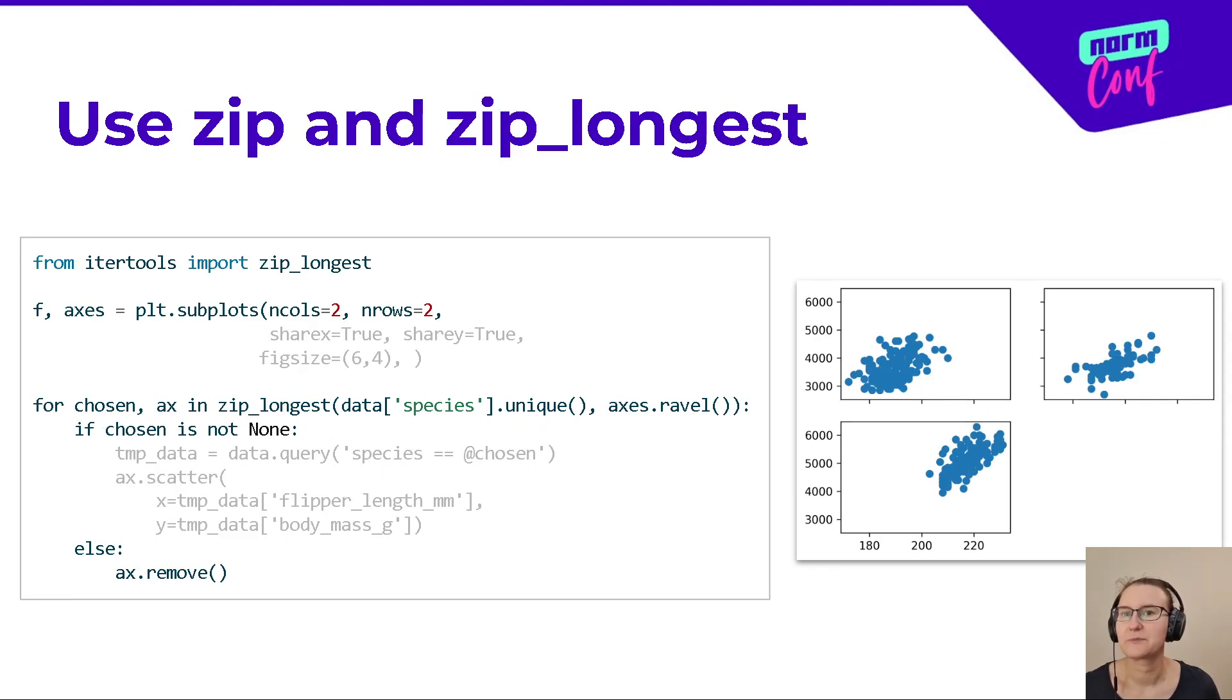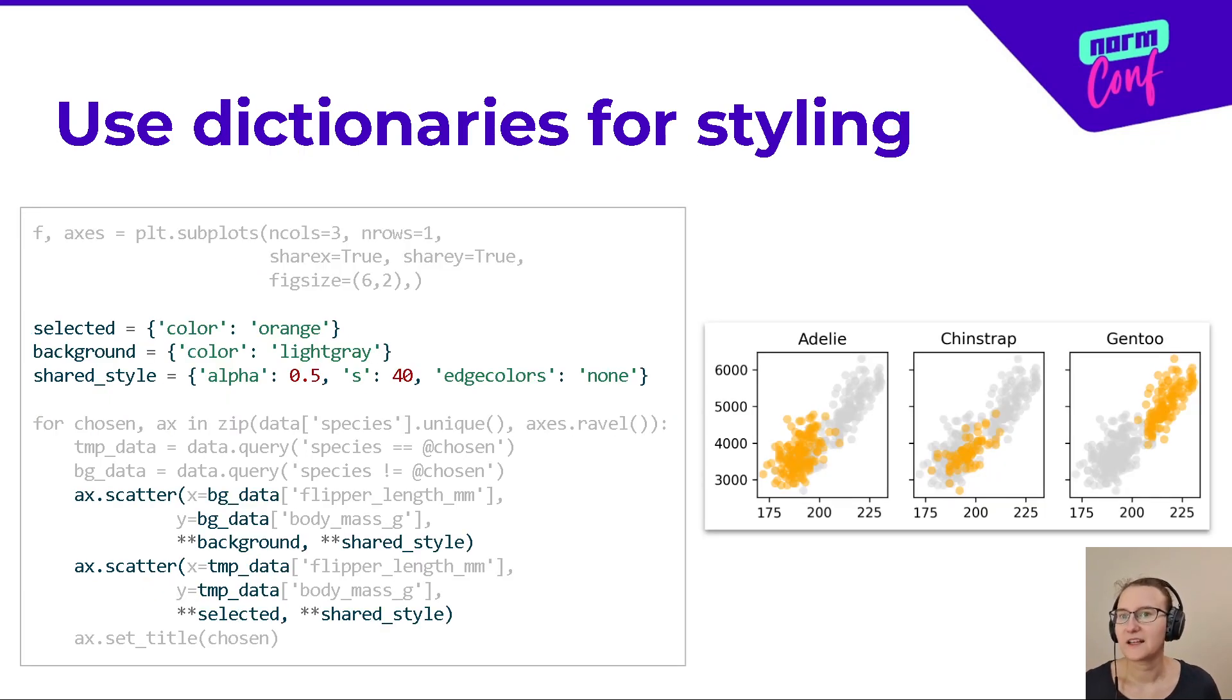I also use ZIP, especially when working with subplots, and a cool trick is to use the ZIP longest function from iterTools, which doesn't stop where the shortest variable is exhausted. Here I use it to get rid of redundant subplots. Next tip.